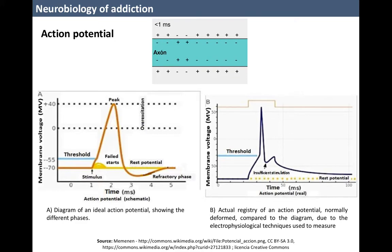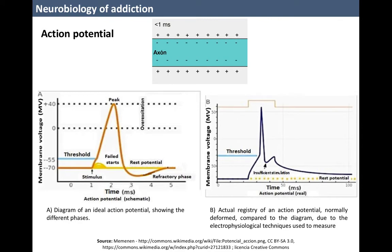Based on the changes of permeability to specific ions of its cellular membrane, neurons decode differences in the distribution of internal electrical charges. A positively charged environment produces a wave of electrical information called action potential, which propagates rapidly and in all directions within the cell and also through the axon.